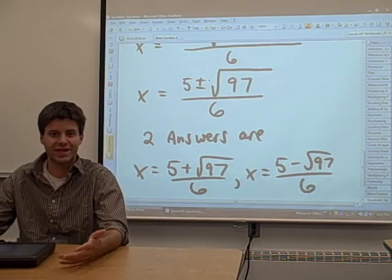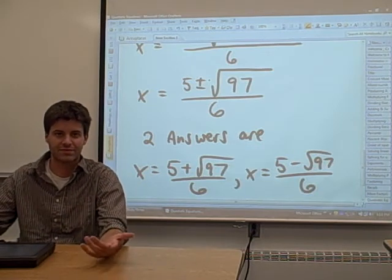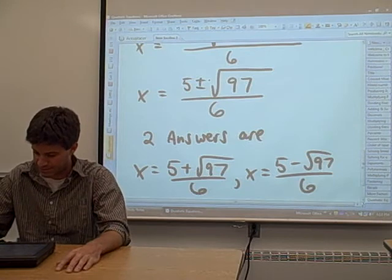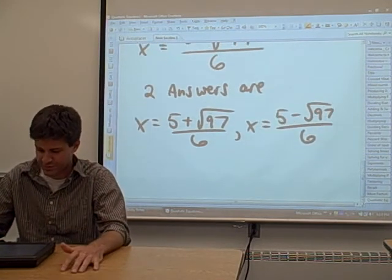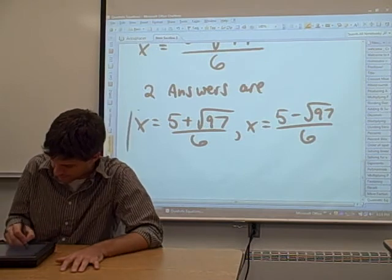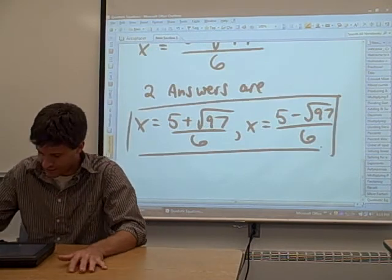Now, if you want to know what that is in maybe a decimal form, you're just going to have to use a calculator. The square root of 97, I don't know what that is. So you just have to plug it into a calculator. If you're not allowed a calculator, then that's your answer.